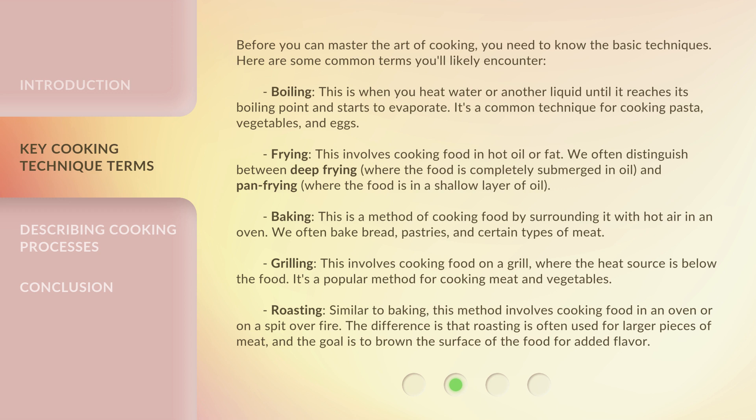Frying: this involves cooking food in hot oil or fat. We often distinguish between deep frying, where the food is completely submerged in oil, and pan frying, where the food is in a shallow layer of oil. Baking: this is a method of cooking food by surrounding it with hot air in an oven. We often bake bread, pastries, and certain types of meat.